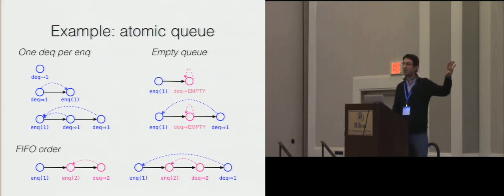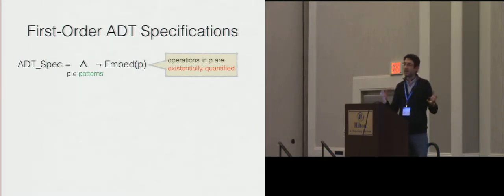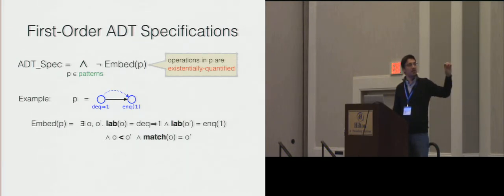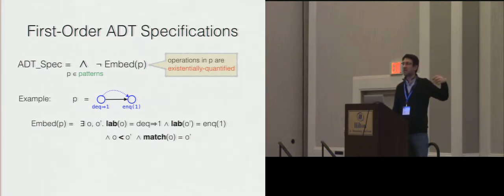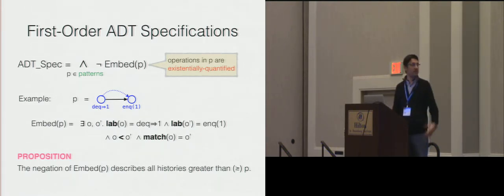Given these violation patterns — executions that give all the reasons for which a sequence is not admitted by a queue — we simply build a first-order formula that describes all histories that cannot embed one of these small patterns. Basically every element of a pattern corresponds to an existentially quantified variable, and we take the negation of all this, giving the formula that describes the executions admitted by the abstract data type — all histories that are not greater than any of these patterns.